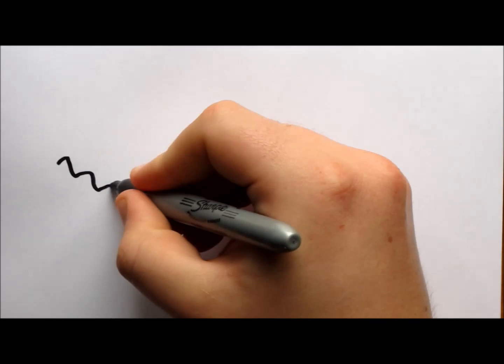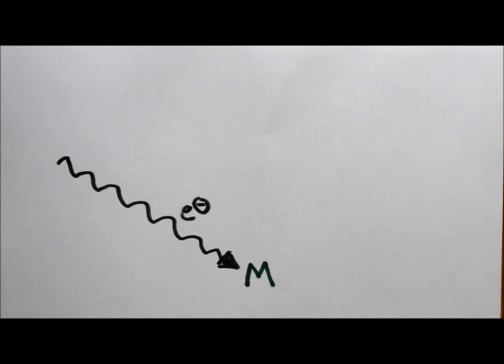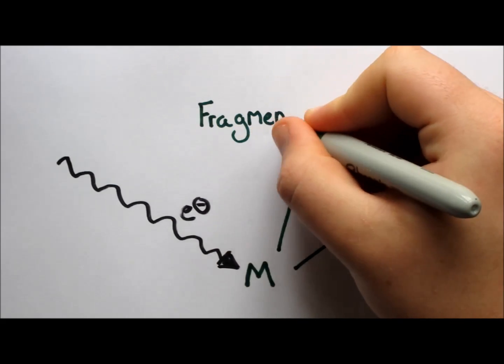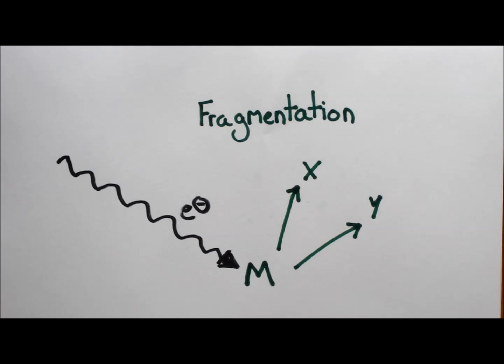The electrons used to ionize the sample are quite high energy, typically around 70 electron volts. This energy can not only form ions, but can also break bonds in the molecule and form molecular fragments.